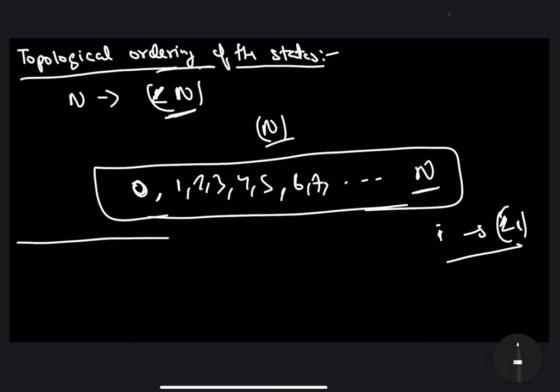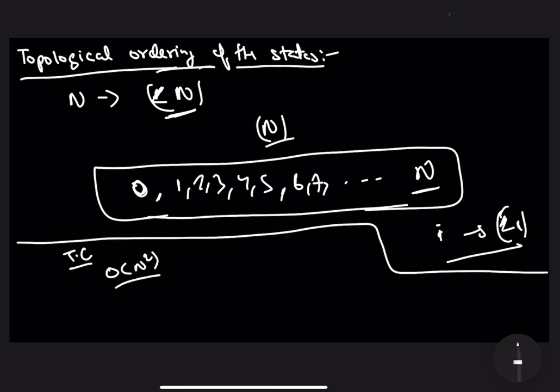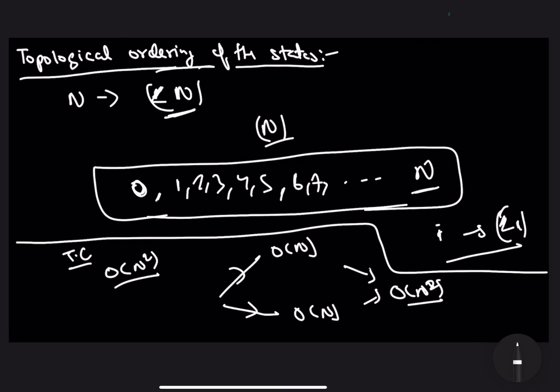The time complexity for this problem is O(N²). The total number of states is O(N), and the time to solve each state from the recurrence relation is O(N), since for solving the ith state we iterate over all indices j from 1 to i. Therefore the total time complexity is O(N²). In the next video we will see how to actually code this problem up.